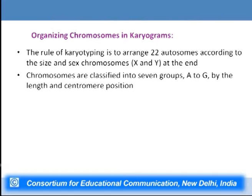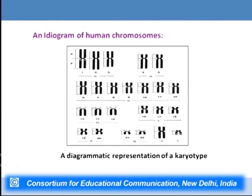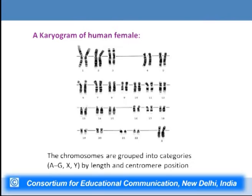Chromosomes are organized in a karyogram with the 22 autosomes arranged by size and sex chromosomes at the end. In humans there are seven groups, A through G, assigned by chromosome length and centromere position. Group A includes chromosomes 1–3; B includes 4–5; C includes 6–12 and the X chromosome; D includes 13–15; E includes 16–18; F includes 19–20; and G includes 21–22 (the shortest autosomes) and the Y chromosome. This grouping is based on centromere location. The figure shows an idiogram — a diagrammatic representation of the karyotype — and the karyogram of a human female showing grouping of autosomes and sex chromosomes.